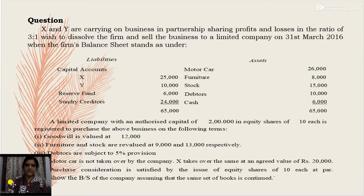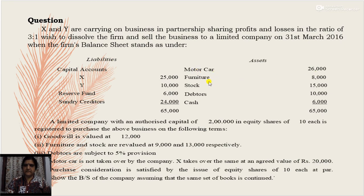Now we will move on to a problem related to acquisition of business where the purchasing company decides to continue with the same set of books. X and Y are carrying on business in partnership, sharing profits and losses in the ratio of 3:1. They wish to dissolve the firm and sell the business to a limited company on 31st March 2016. The firm's balance sheet shows assets — motor car Rs. 26,000, furniture Rs. 8,000, stock Rs. 15,000, debtors Rs. 10,000, cash Rs. 6,000.